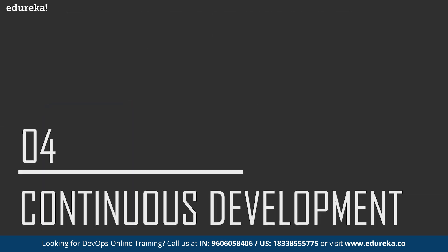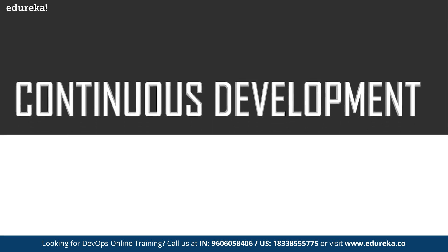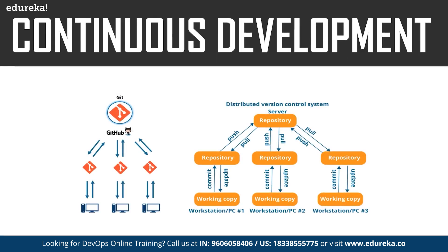The first phase of the DevOps lifecycle is continuous development. This is the phase which involves planning and coding of the software application's functionality. There are no tools for planning as such, but there are a number of tools for maintaining the code. The vision of the project is decided during the planning phase, and then the actual coding begins. The code can be written in any language but is maintained using version control tools. The most popular tools used are Git, SVN, Mercurial, CVS, and Jira. Tools such as Ant, Maven, and Gradle can be used for building or packaging the code into an executable file so that it can be forwarded to the next phases.